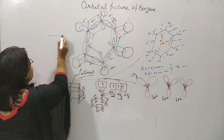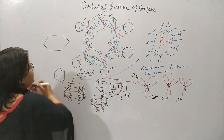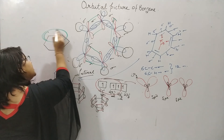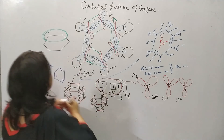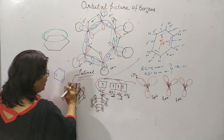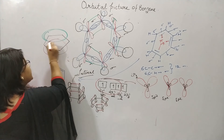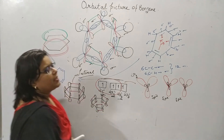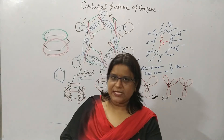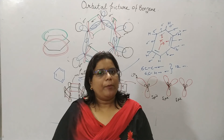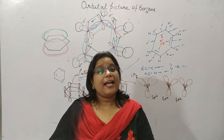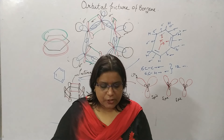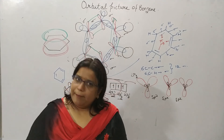Now we will draw the pi bond cloud for the benzene ring. If you want to draw the pi cloud, you draw the upper side cloud above the ring plane and the lower side cloud below the ring plane. So the pi orbital is formed with the help of the 2pz orbital, the sigma bond is formed by sp2-sp2 overlapping, and by sp2-1s orbital overlapping with hydrogen.